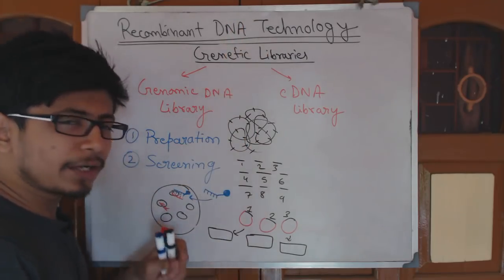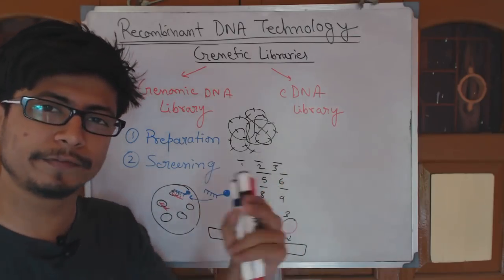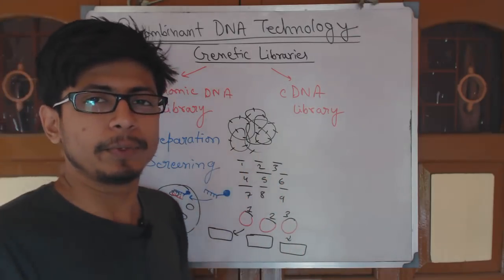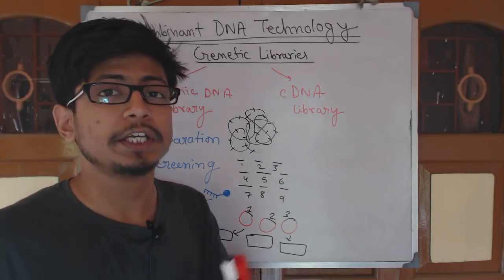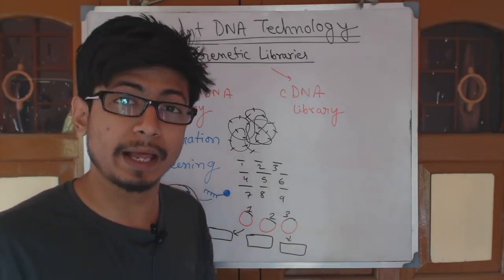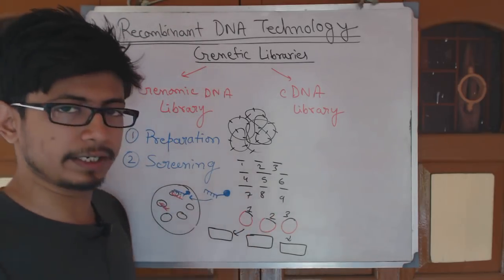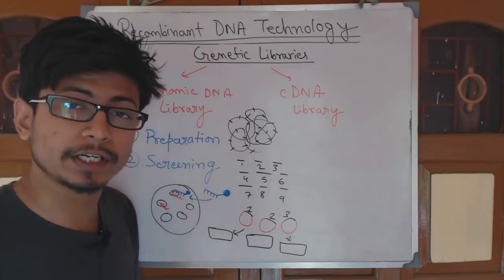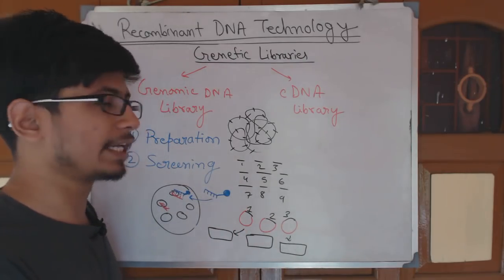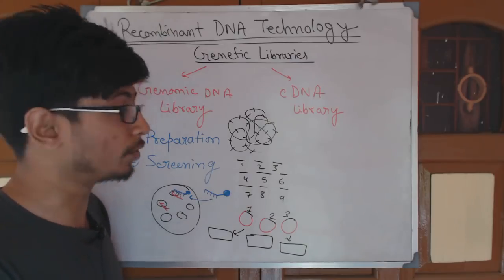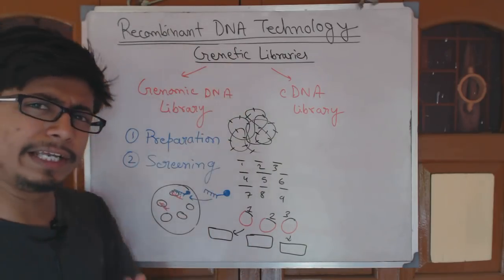To construct this huge amount of genetic content in different vectors, we require large vectors with large carrying capabilities. So most of the time we use the lambda phage vector or phagemid vectors of different types. We can also use a bacterial artificial chromosome (BAC) to do these things. So this is the genomic DNA library in whole.